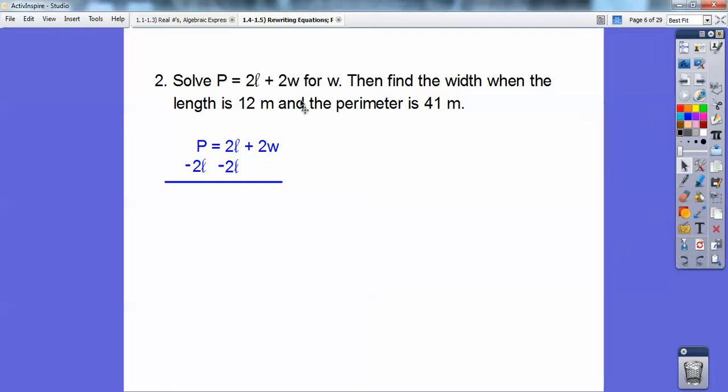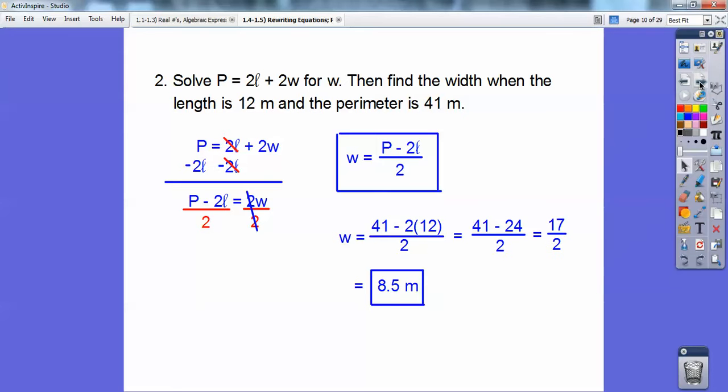Let's take that equation. We're solving for w, so I'm going to subtract 2l from both sides. On the left, I get P - 2l = 2w. Then we're going to divide by 2. So w = (P - 2l)/2. So there's the first part, we solved for w. Then find the width when the length is 12. I'm going to plug in 12 right there and the perimeter, 41 for the perimeter. So plug it in and you end up getting 8.5 meters.